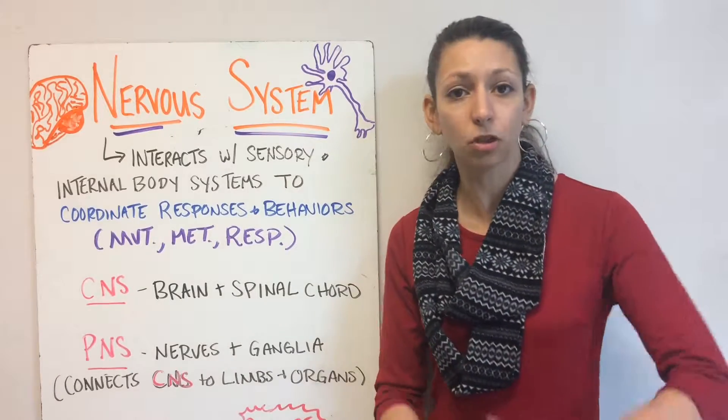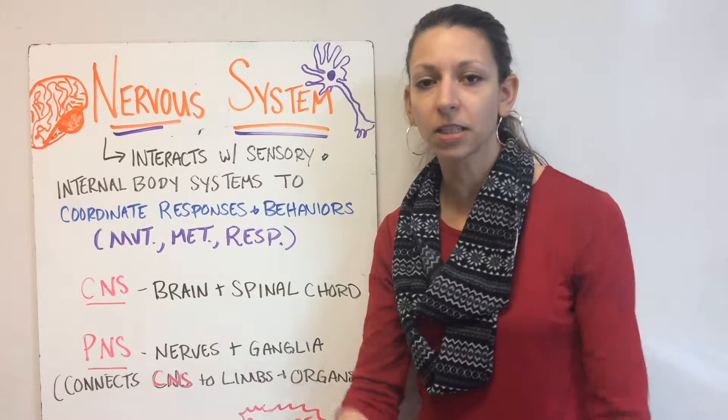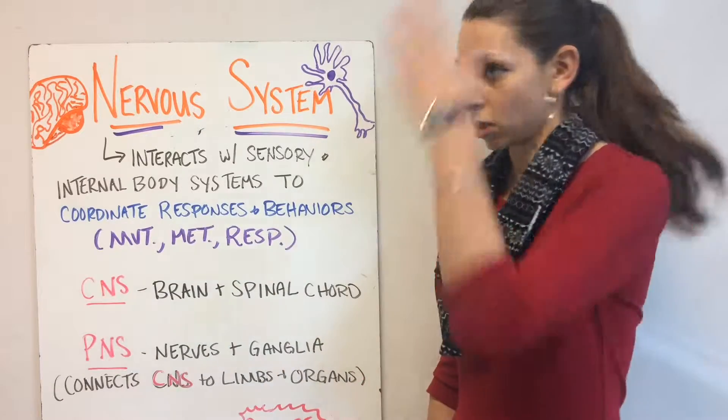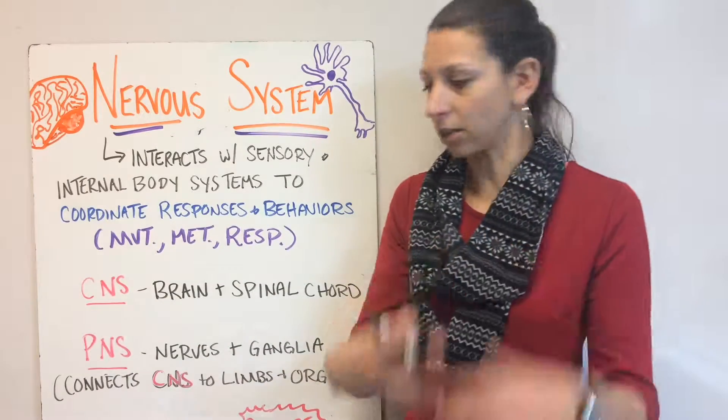We have divided it up into two different types: the central nervous system and the peripheral nervous system. The central nervous system includes your brain and your spinal cord, the center of everything.